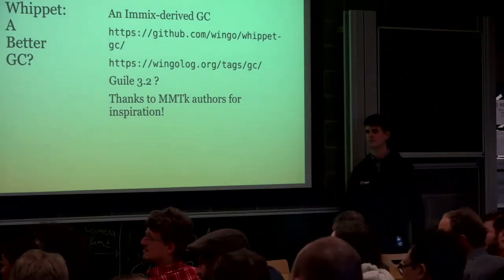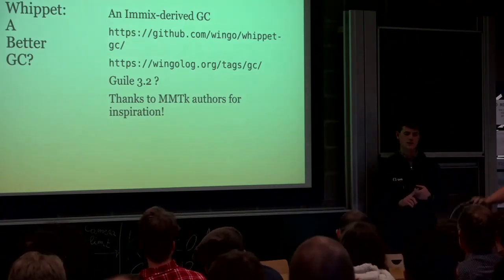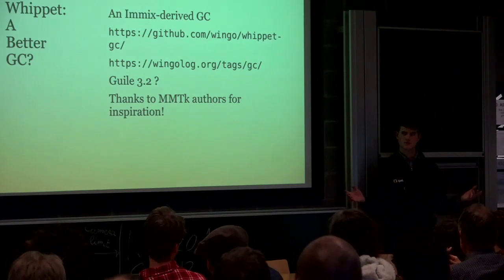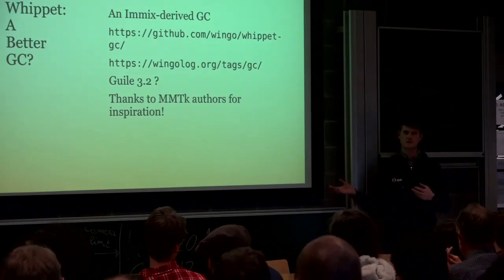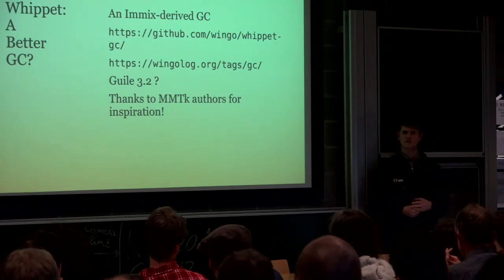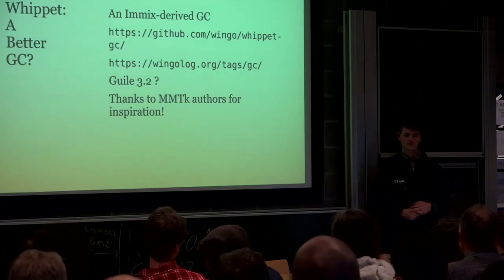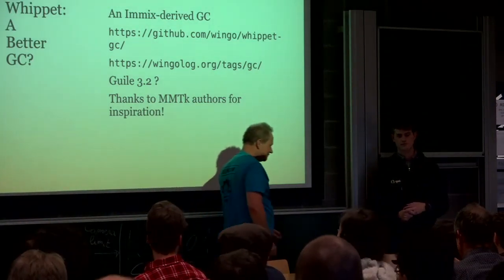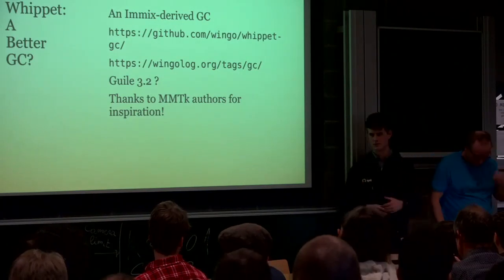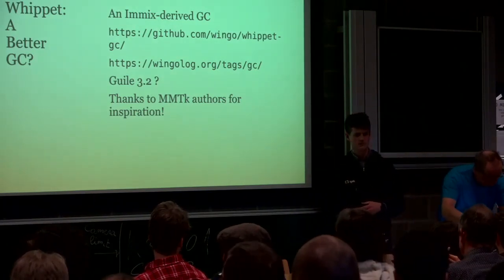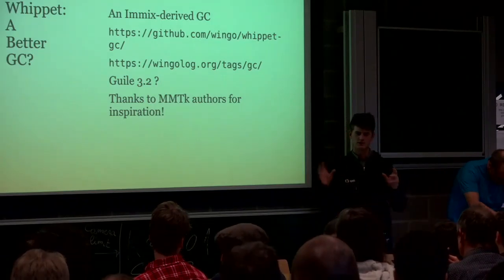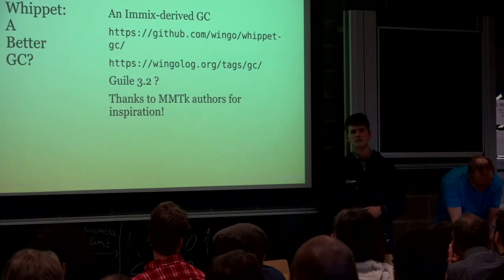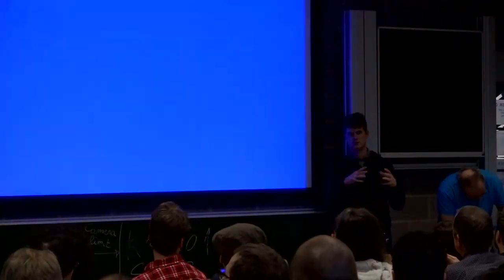Question: How will this affect Guix users? Answer: Guix launches multiple threads to compile things, and there's contention in BDWGC — it doesn't scale well as you add threads with allocation-heavy workloads. When Guix incorporates Whippet, it should scale better with multiple threads. Additionally, we'll have better tooling for understanding heap usage, and be able to place ourselves better on the space-time trade-off. Longer-running daemons like the Shepherd should also benefit, yielding a more robust system.